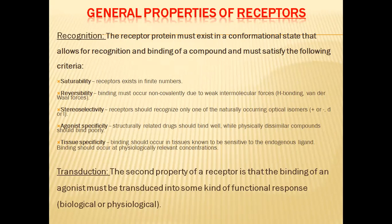The fourth criterion is agonist specificity. Drugs or molecules should bind well with these receptors, while physically dissimilar molecules should bind poorly. Only molecules or stimuli having related structures should bind well; dissimilar stimuli should bind poorly. This is called agonist specificity.